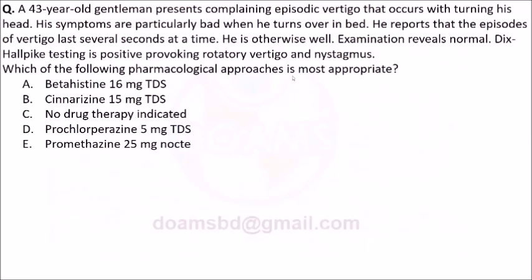We now request Dr. Rashid to go through the next case. A 43-year-old gentleman presents complaining of episodic vertigo that occurs with turning his head. Symptoms are particularly bad when he turns over in bed. The episodes of vertigo last several seconds at a time. He is otherwise well. The Dix-Hallpike test is positive, provoking rotatory vertigo and nystagmus. What is the diagnosis?